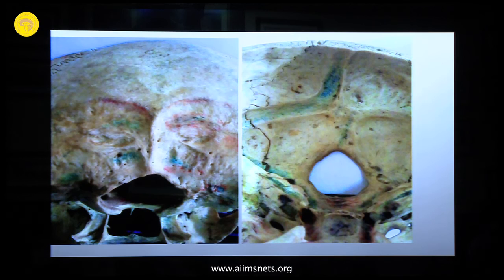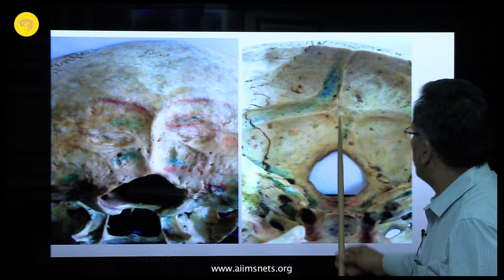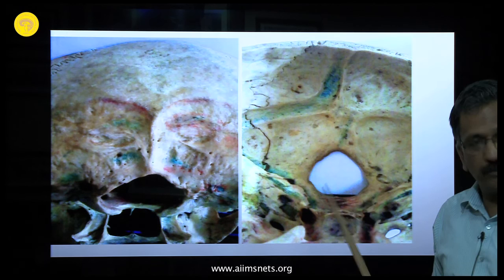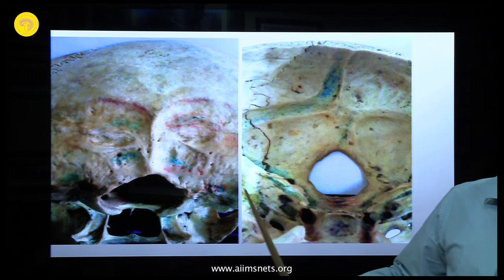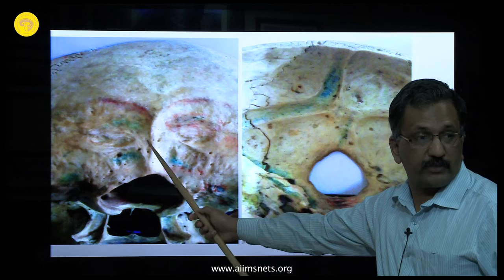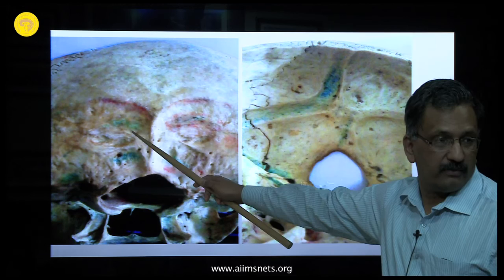For occipital fixation, remember the anatomy: the internal occipital crest is the thickest part. Just below it is the occipital sinus. You need bicortical purchase — monocortical will not hold. The only stable point is the internal occipital crest. Even if there is venous bleeding from the sinus, it will stop automatically once the screw is placed.